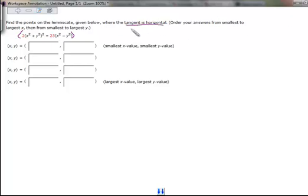Tangent horizontal means the slope, which is the derivative, should be set equal to zero.